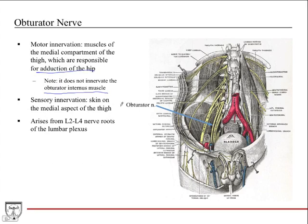Sensory innervation: it does skin on the medial aspect of the thigh — there's a patch of skin on the inner thigh done by the obturator nerve. That's easy to remember since it does the medial compartment and then the skin just over that. It arises from the L2 to L4 nerve roots — remember it's a lumbar plexus nerve.